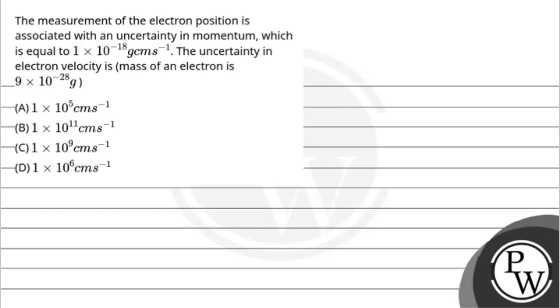Let's read the question. The measurement of the electron position is associated with an uncertainty in momentum which is equal to 1 × 10^-18 gram centimeter per second. The uncertainty in electron velocity is what we need to find, and the mass of the electron is given as 9 × 10^-28 grams.